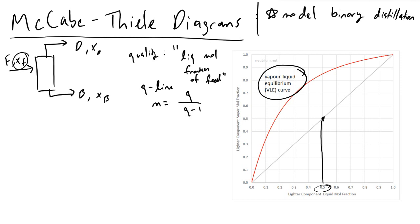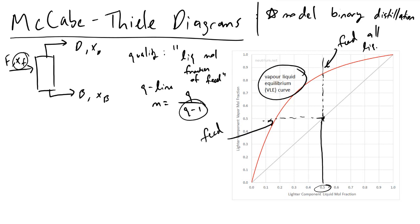If all feed is liquid, Q equals 1, making the denominator zero — so the slope is infinity, giving a vertical line pointing straight up. If feed is pure vapor, Q equals zero, so the slope is 0 over (0 minus 1), which equals zero, giving a horizontal line.